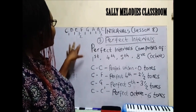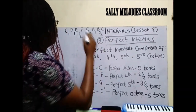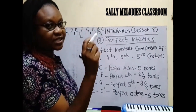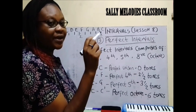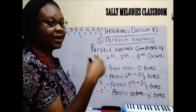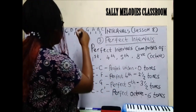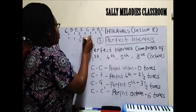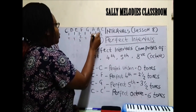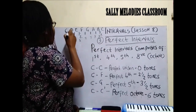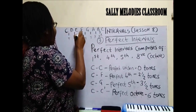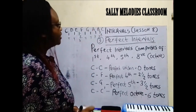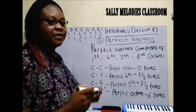First we look at the formula. From C to C, the C scale is our example in most of our practical exercises. The formula is: tone, tone, semitone — tone, tone, tone, semitone. Or: whole, whole, half — whole, whole, whole, half. That is the formula of any major scale.